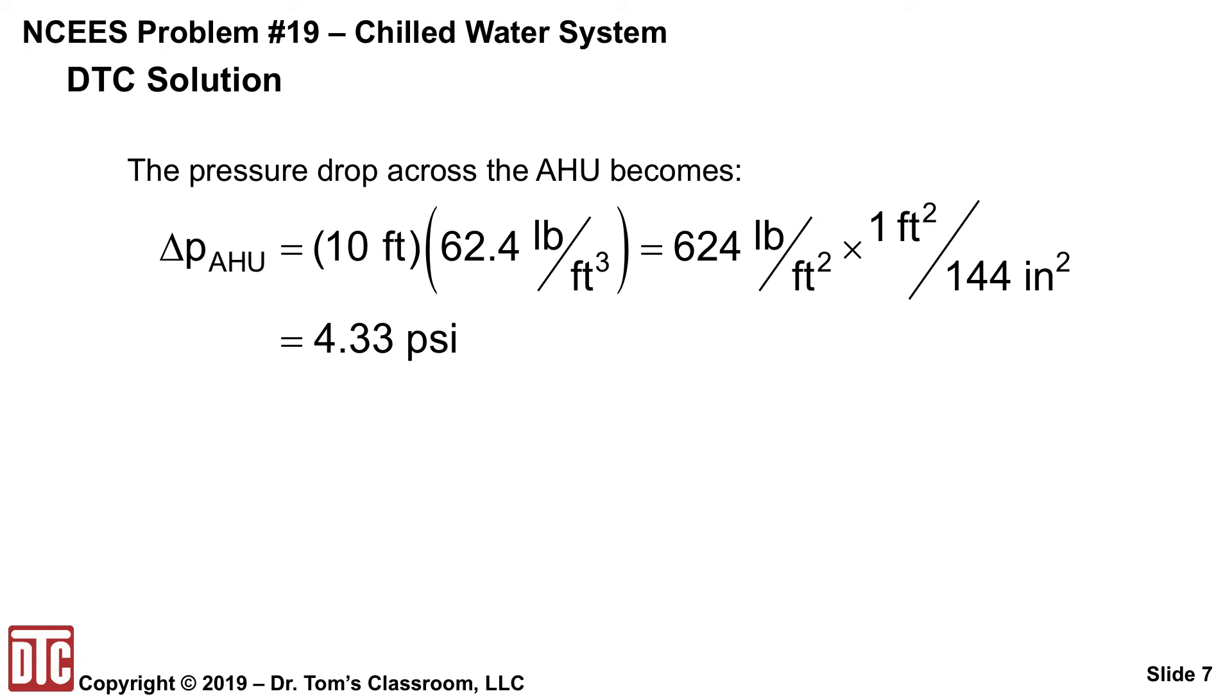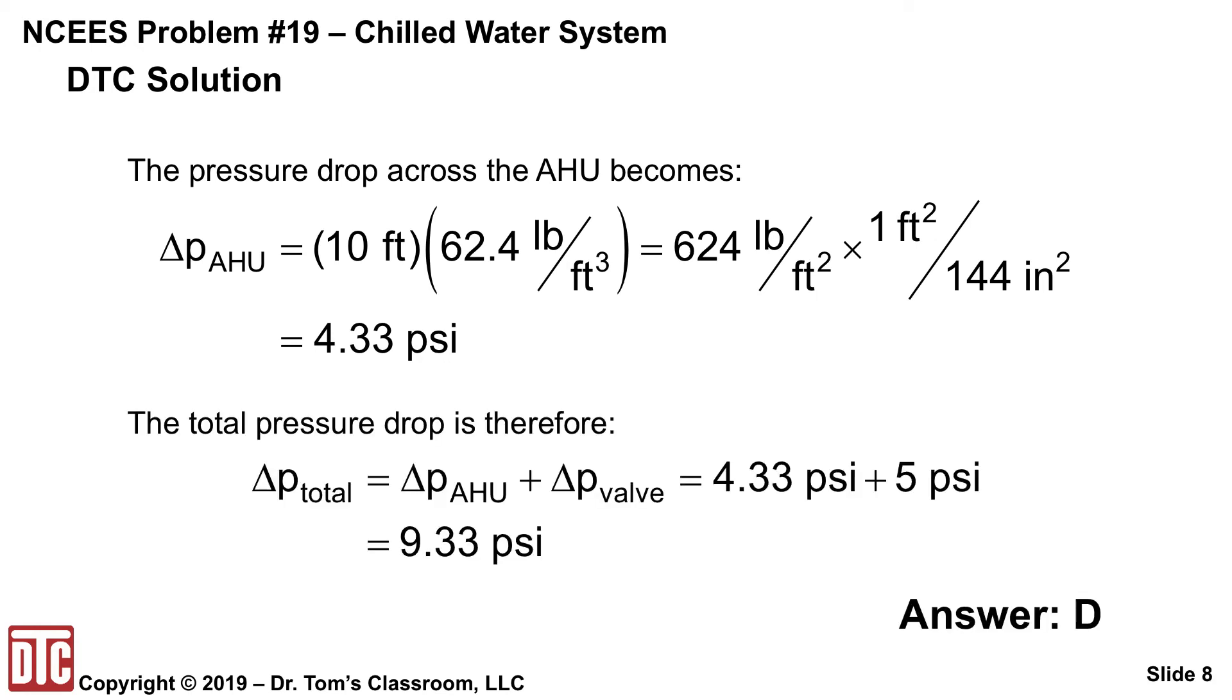So you've got 10 feet times 62.4 pounds per cubic foot, which gives you 624 pounds per cubic foot, which you need to convert to PSI. When you do that, you get 4.33 PSI. And so just add the 5 PSI for the valve and you get 9.33, and that's answer D.